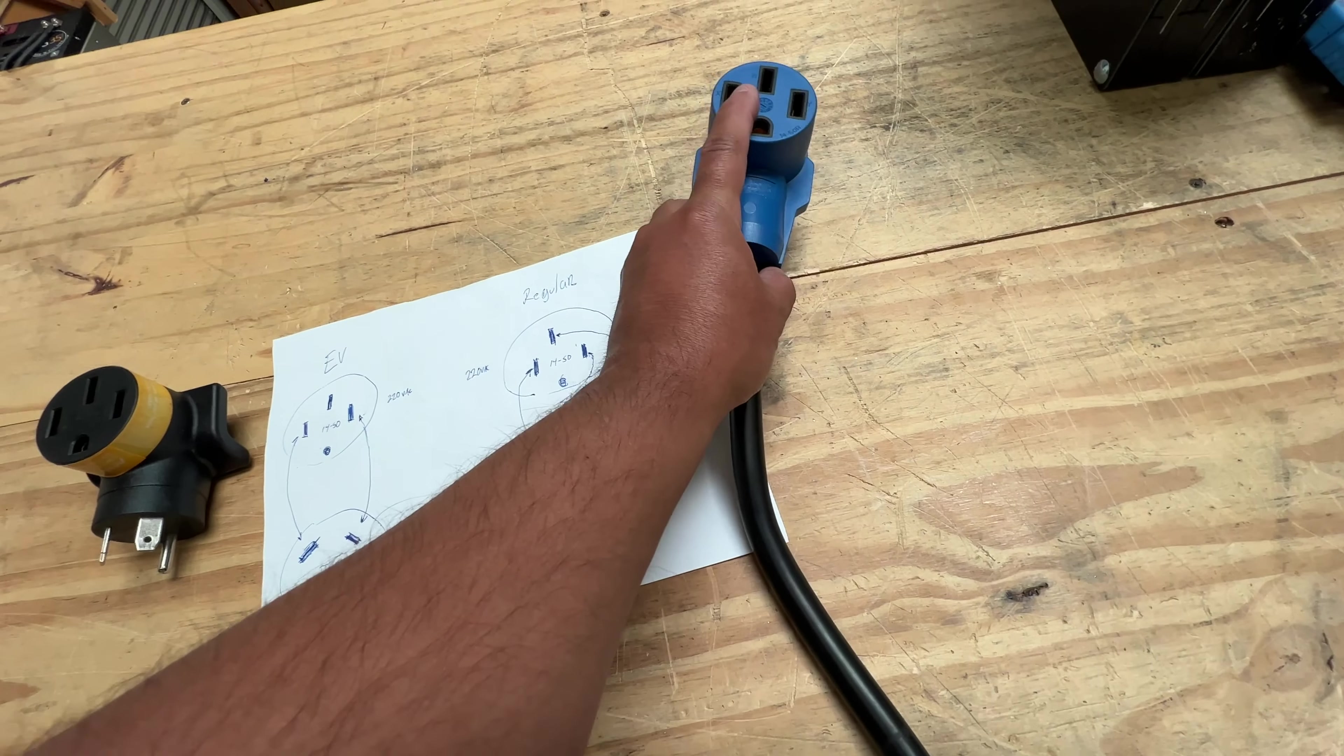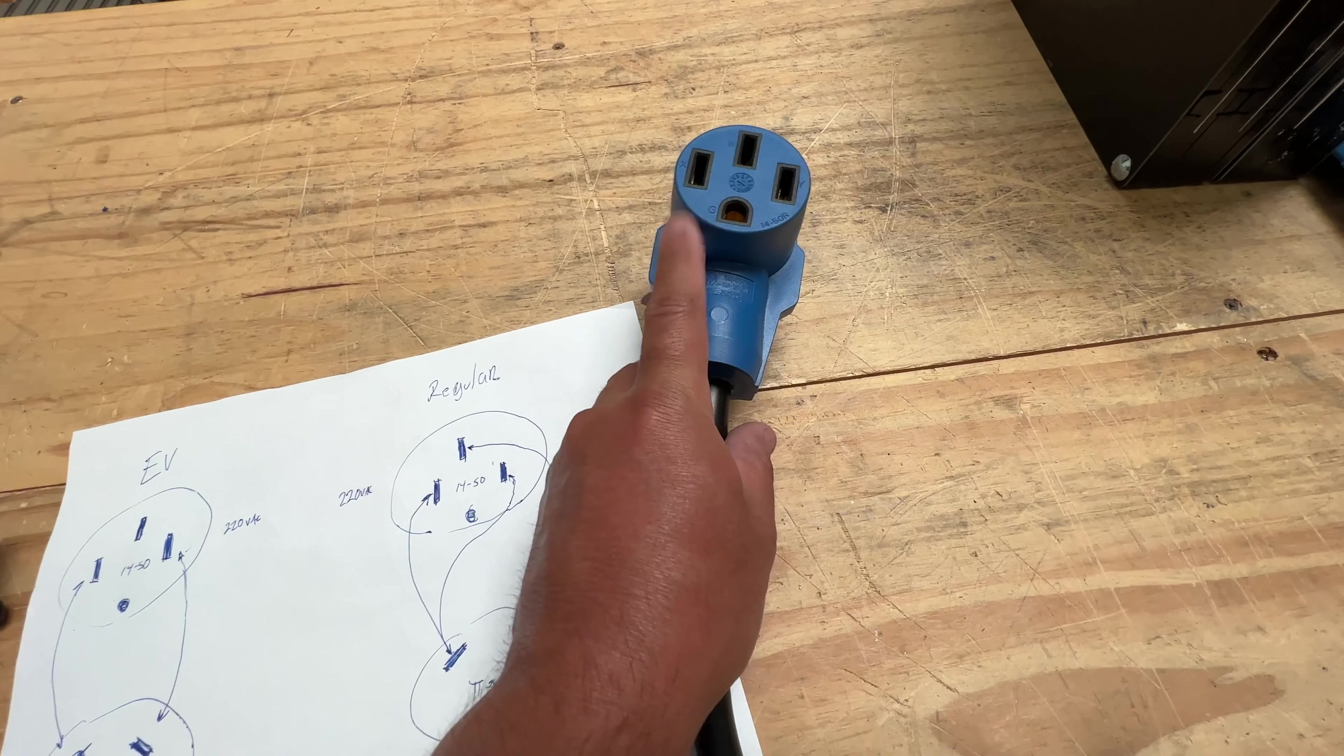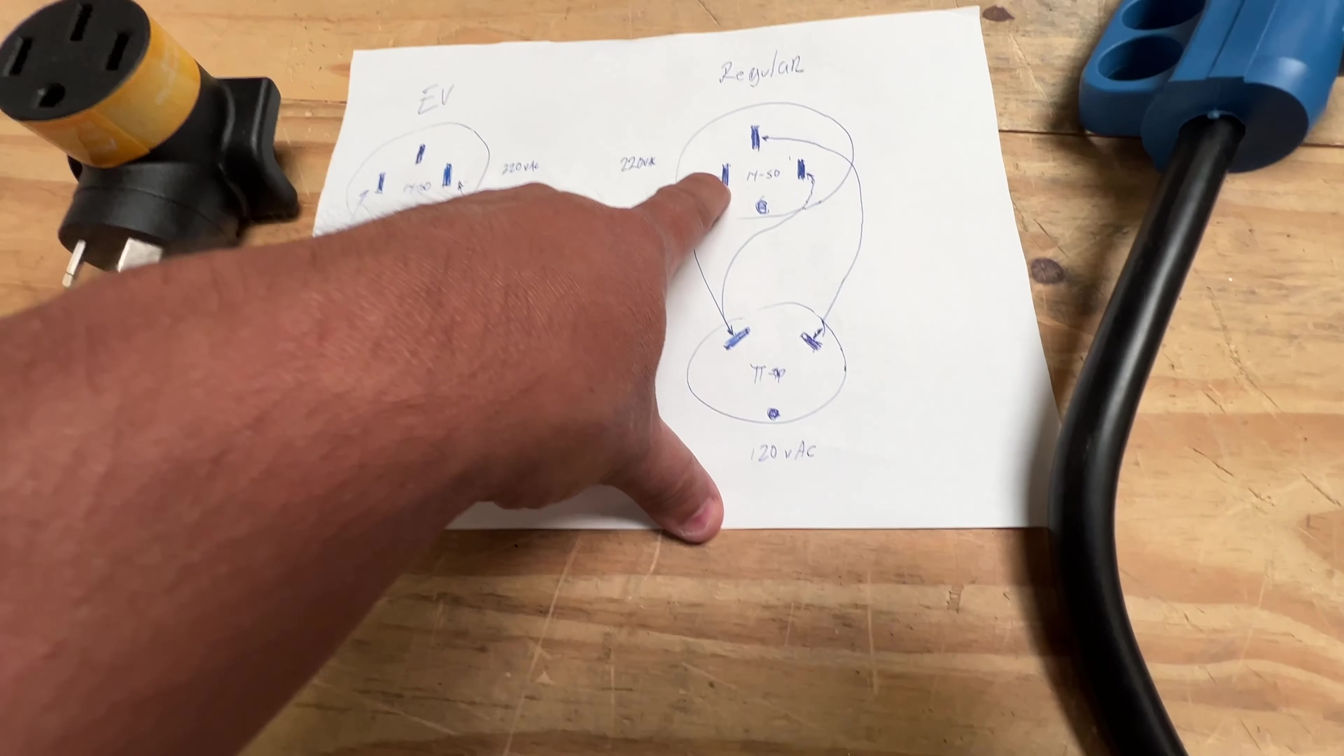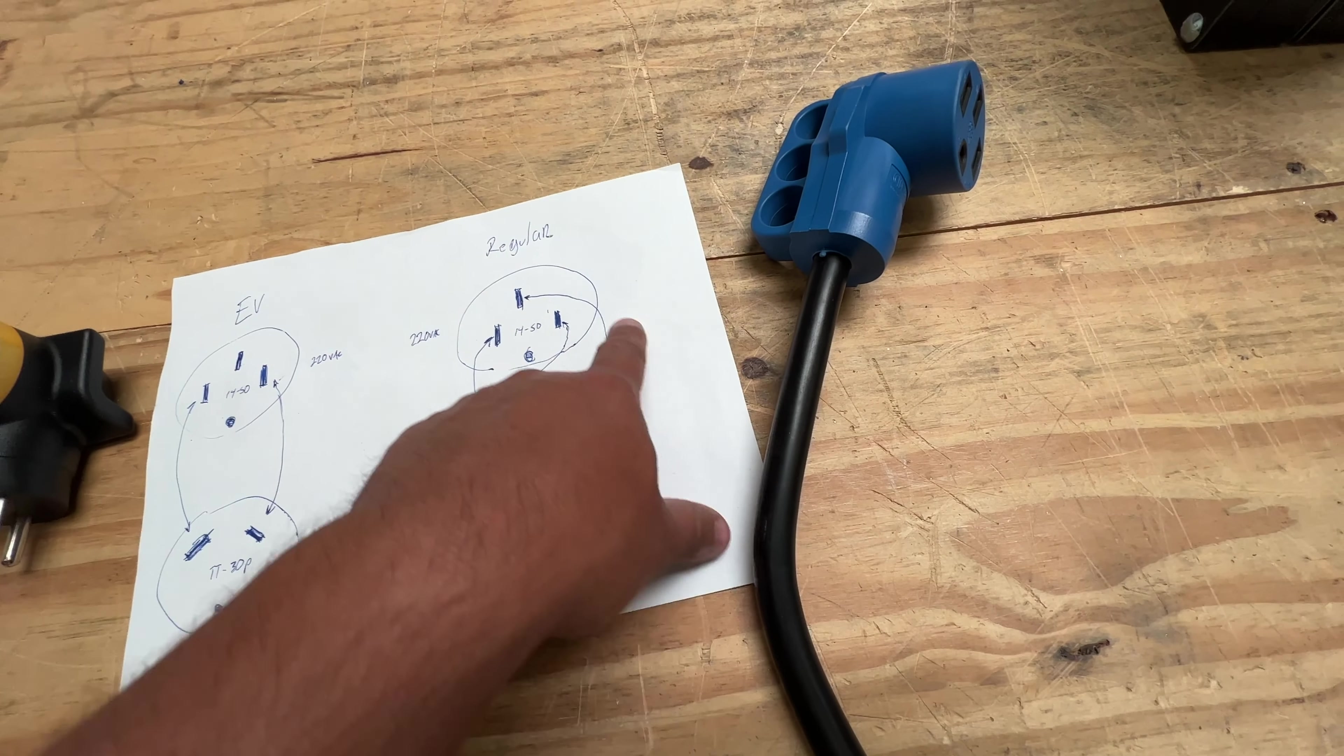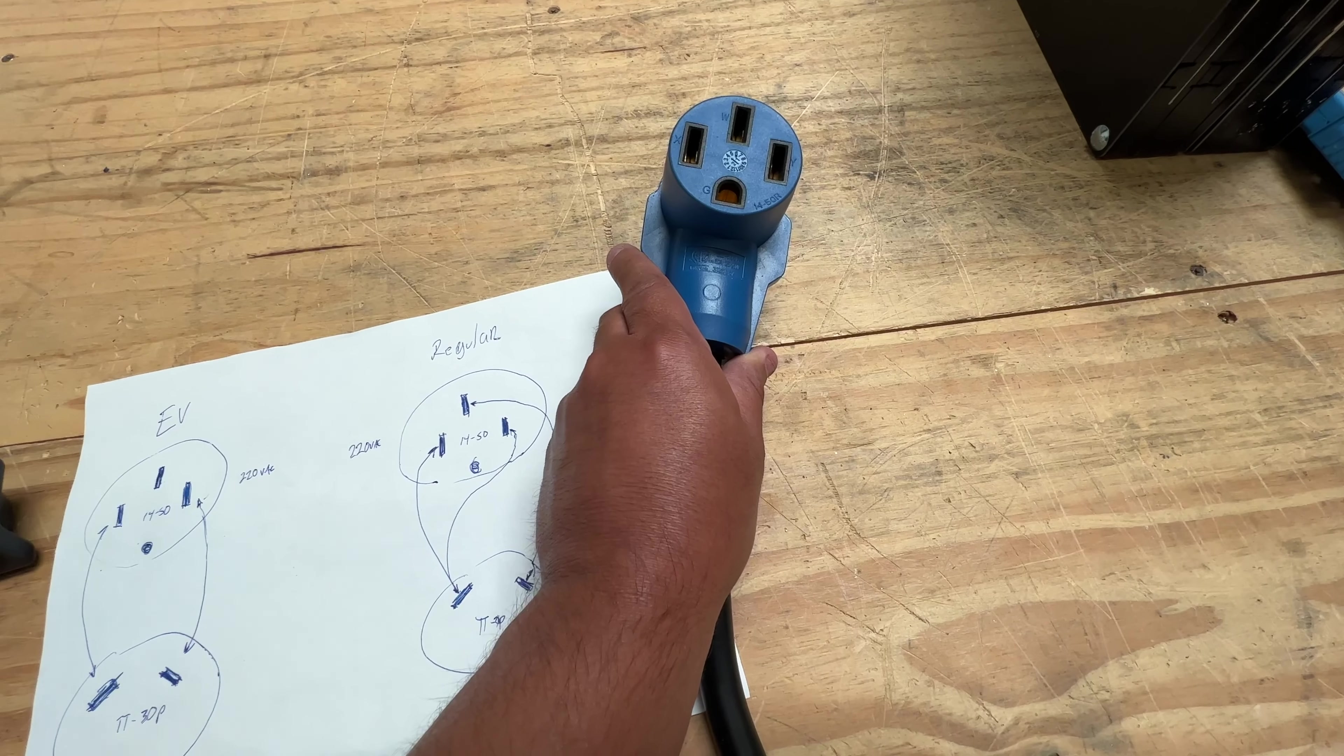What they did is they took the hot leg and split it into the two hot legs of the NEMA 14-50, and then they got the neutral and connected the neutral to the neutral. In this case, you will only be able to get 120 volt AC from the neutral to one of the hot legs and to the other hot leg.